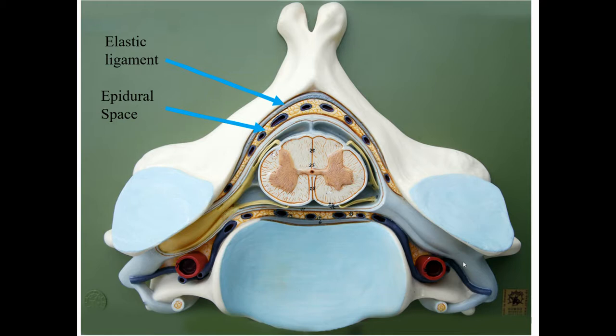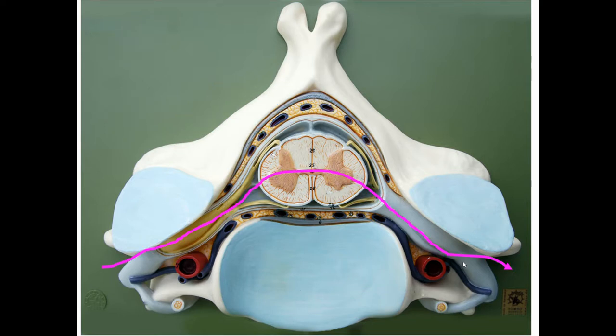The fat layer on top of the dura mater is called the epidural space. If you've ever had an epidural injection, this is where the injection is placed — in that fat. Anesthetics are fat soluble, so they diffuse through the membranes and numb up the spinal nerves. Then we get to the individual membranes.